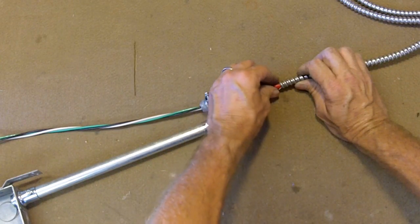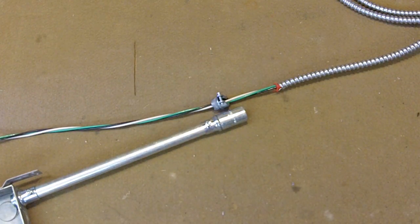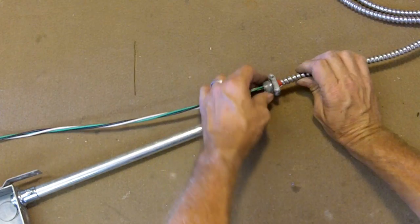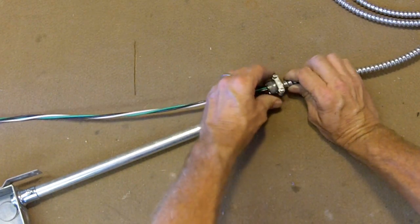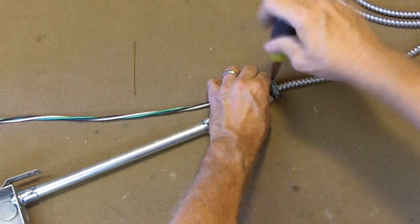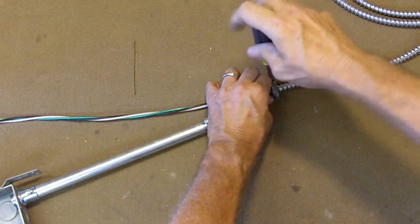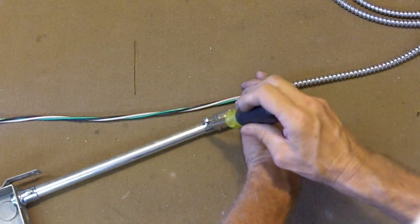But, just slide the MC connector over. Don't forget your anti-short. Notice how I turn the split the opposite direction. At least that's how I was taught. You guys might do it different. And then we'll slide that up. And we'll go ahead and tighten this up a little bit.